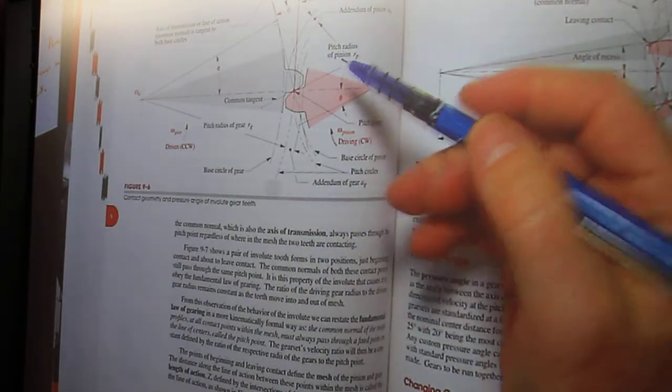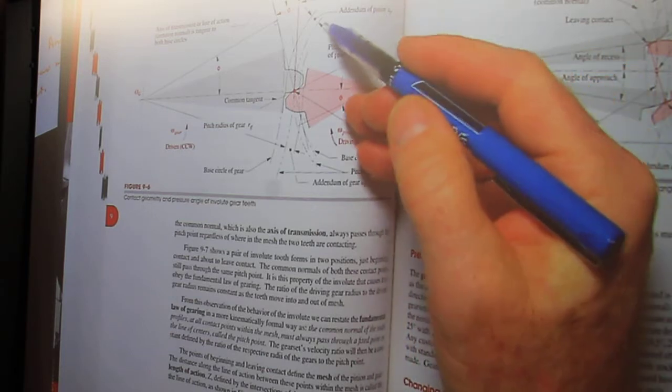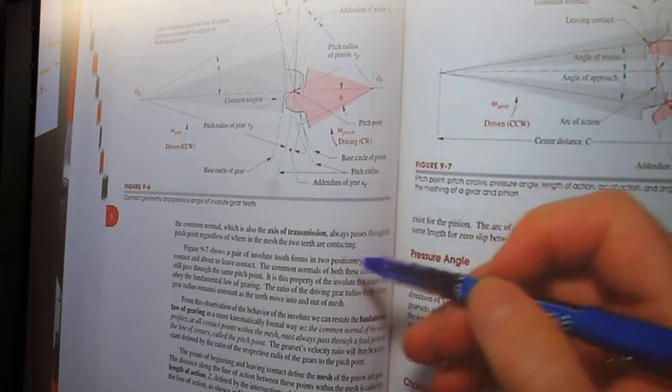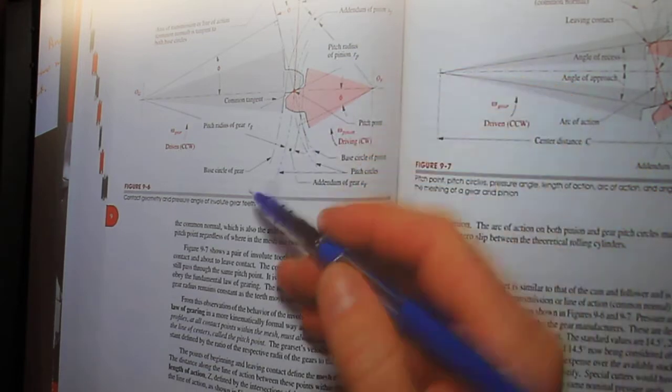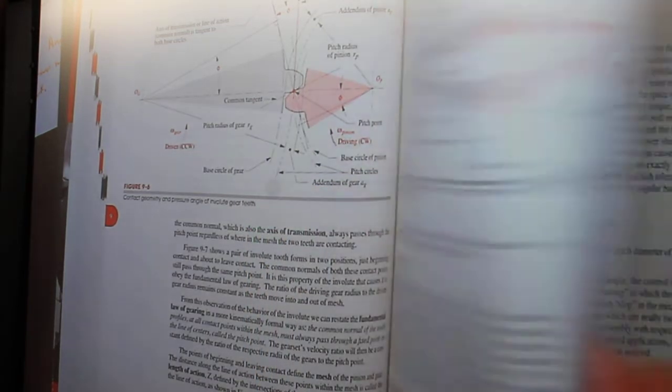So if you look at all these things here—the addendum and the dedendum, and the pitch radius for the pinion, and the pitch radius for the gear, or even this right here—if you're looking at this, the base circle, all of this stuff here.